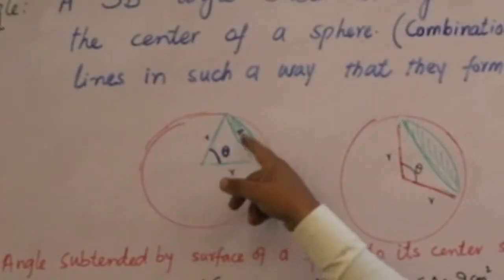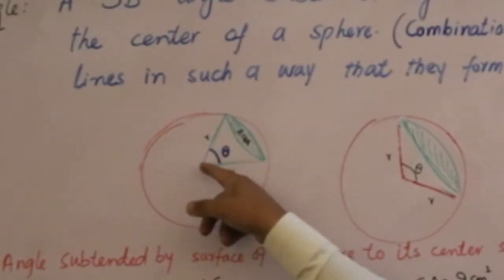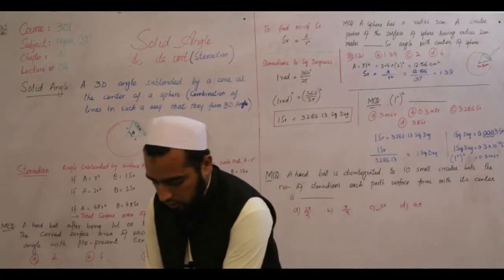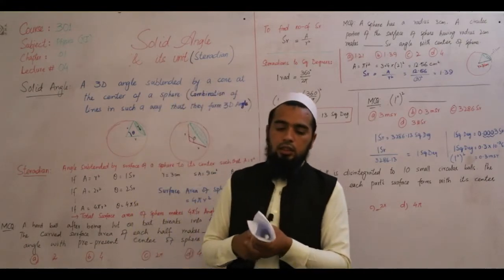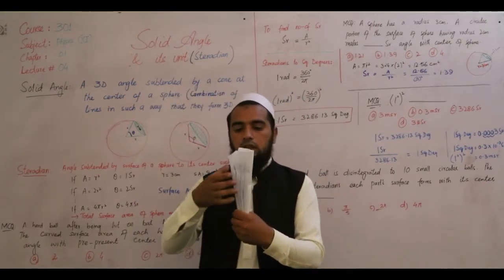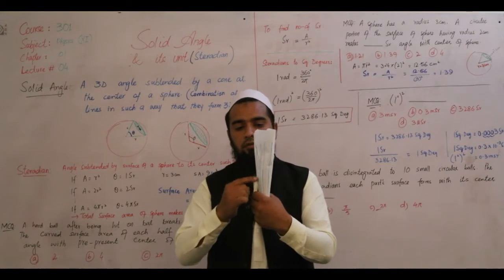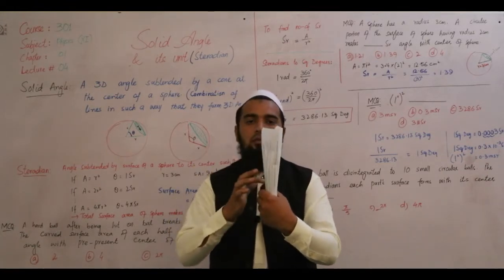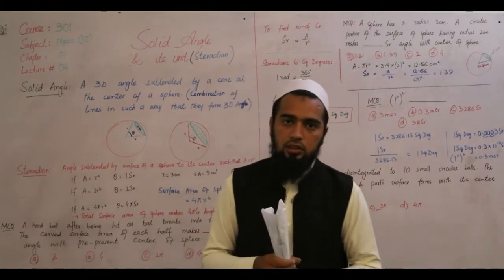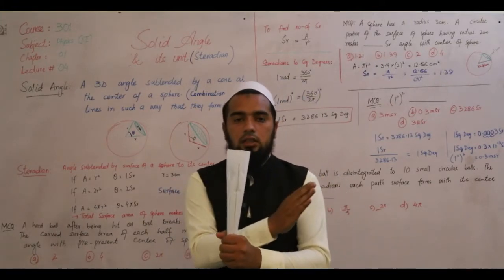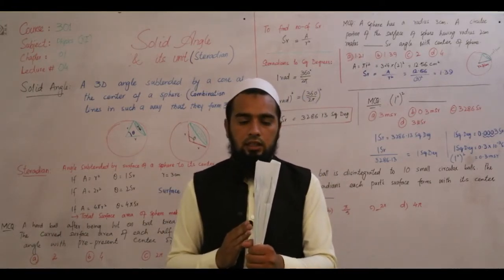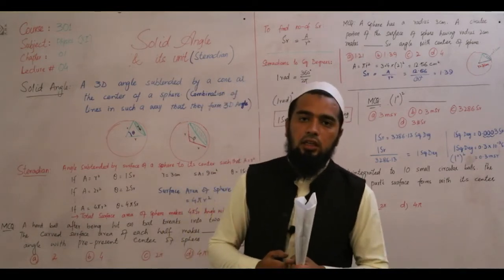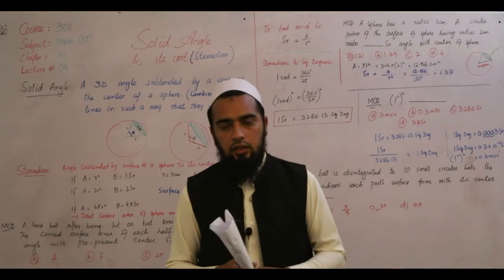یہ sphere ہیں. اور اگر یہ area ہم center کی طرف پیچھے لے جائیں تو یہ cone ہمارے پاس بنتا ہے — اس طرح نیچے کی طرف اس طرف بھی اور اس طرف بھی — in three dimensions. دیکھیں x axis ہمارے پاس ہے، y axis بھی ہے اور z axis — یعنی three dimensions میں یہ angle پھیلا ہوا ہے.